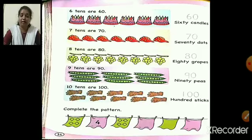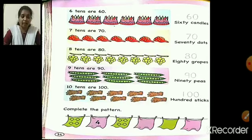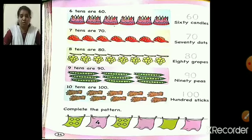Eight 10s because we have 8 groups of grapes, and in each group we have 10 grapes. So if we add 10 eight times we get 80. Eight 10s means 8 groups, and 80 because 10 grapes in each group. So 8 tens are 80 — trace 80.